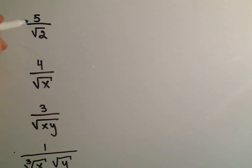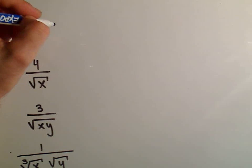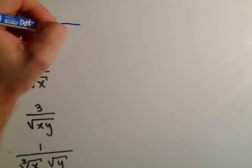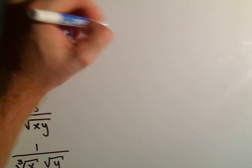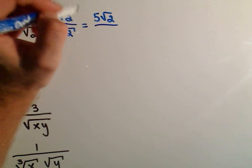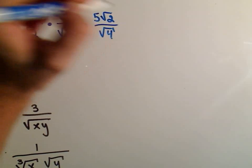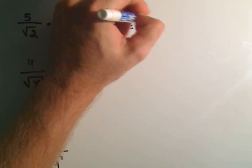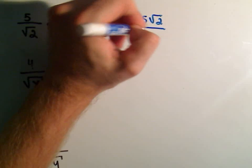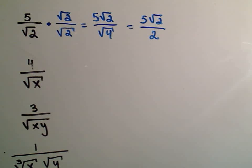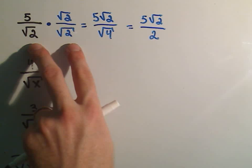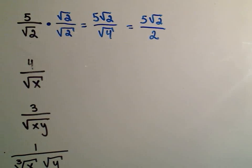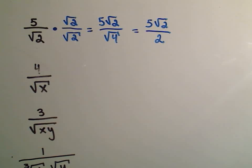To get rid of the square root of 2, all we really have to do is multiply the top and bottom of our fraction by the square root of 2. On top, you simply get 5 square root of 2. On the bottom, square root of 2 times the square root of 2 gives us the square root of 4, which is simply 2. Notice that if you take the square root of something times the square root of something, it cancels out and you're just left with the thing under the square root.